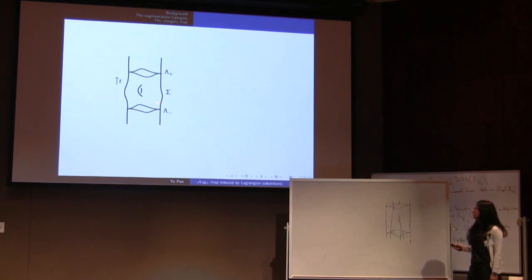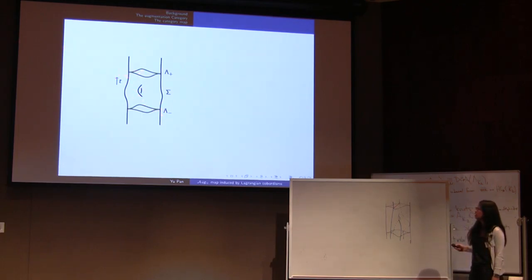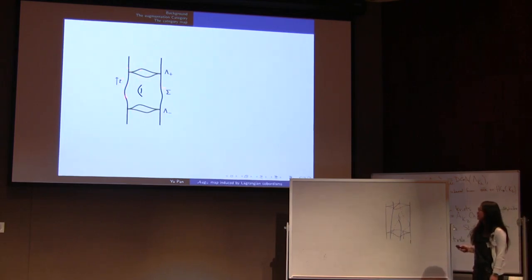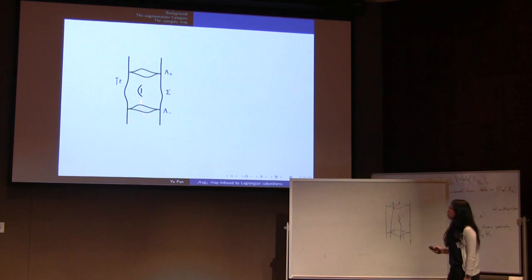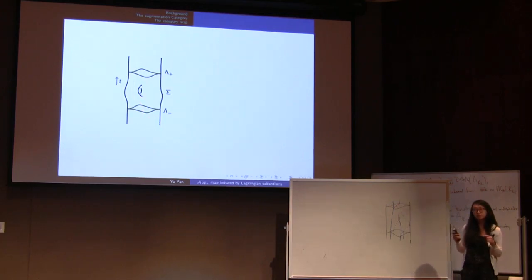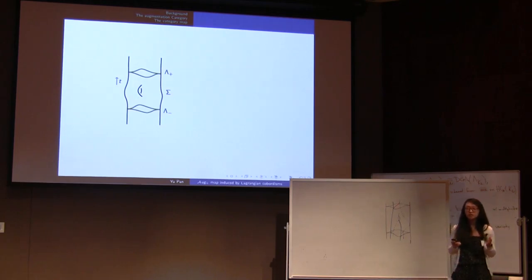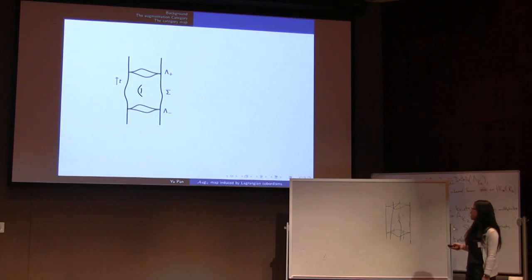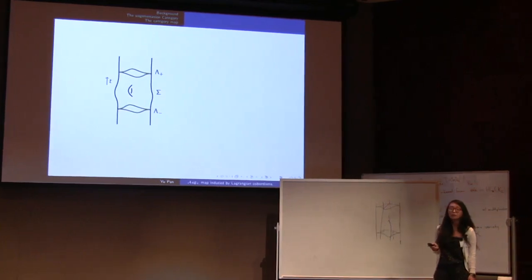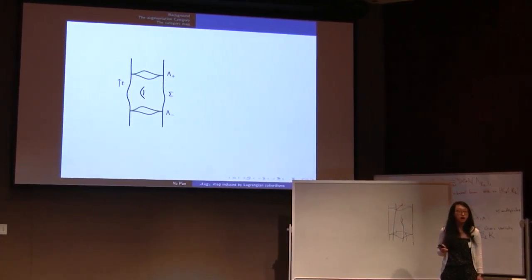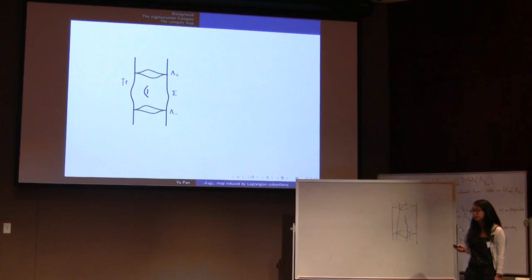To answer this question, we need to see: if there exists a cobordism, then what can we say about these Legendrian knots? Can we get any relation between the Legendrian knots? If the two given knots satisfy this relation, then it's fine. If they don't, then we can say there's no cobordism between them. In this way, we can build up an obstruction to the existence of Lagrangian cobordism.